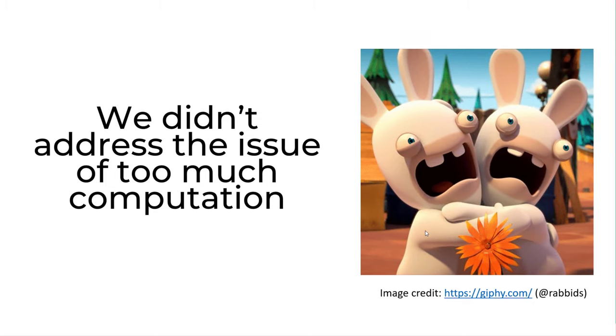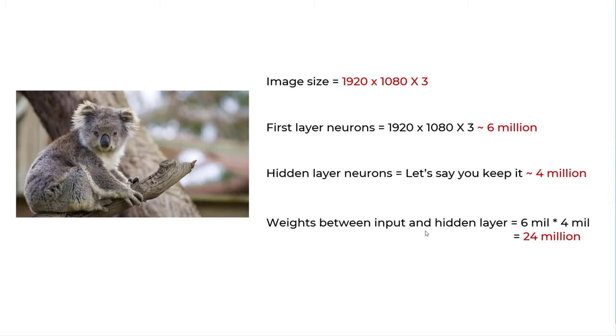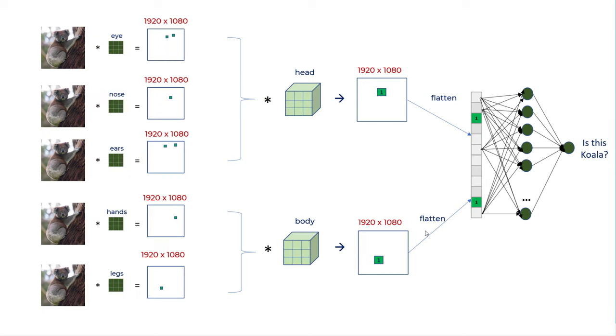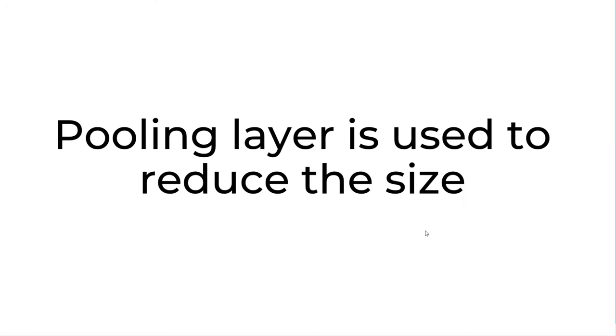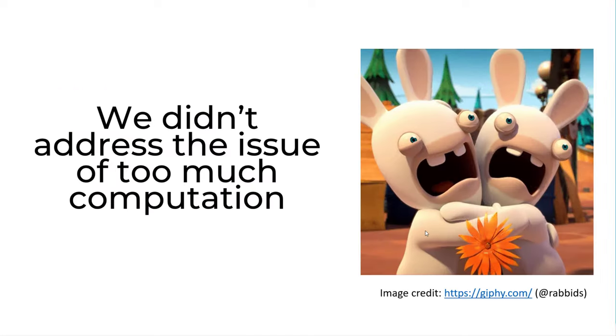But we did not address the issue of too much computation yet. My rabbits are still getting electrical shock. Because for this image size, if you are applying convolution, let's say with some padding, you are still getting same size of image. You did not reduce the image size. Sometimes people don't use padding, so they reduce the image size, but only a little bit. So pooling is used to reduce the size. The main purpose of pooling is to reduce the dimension so that my computer doesn't get this shock.